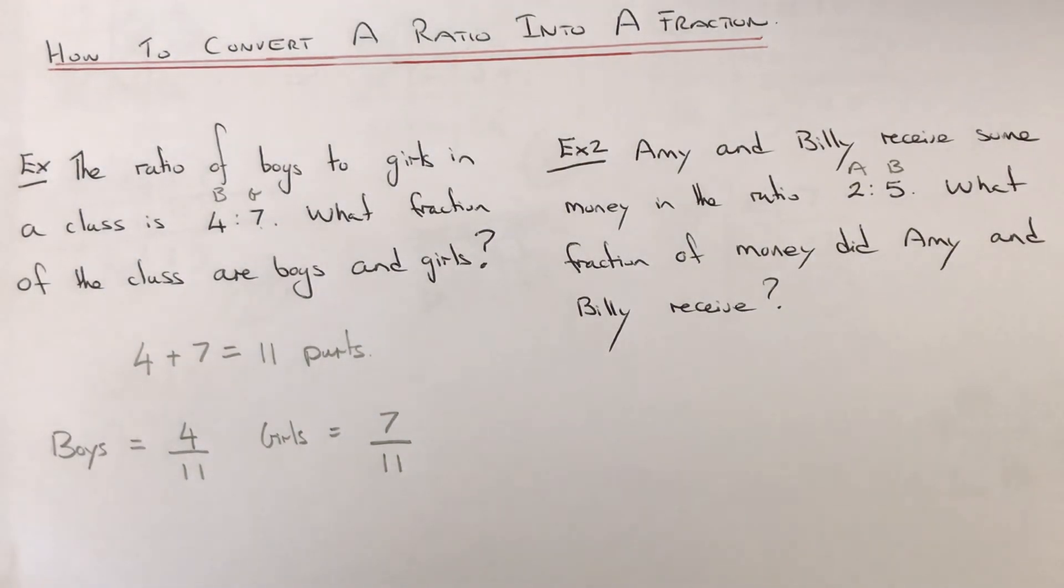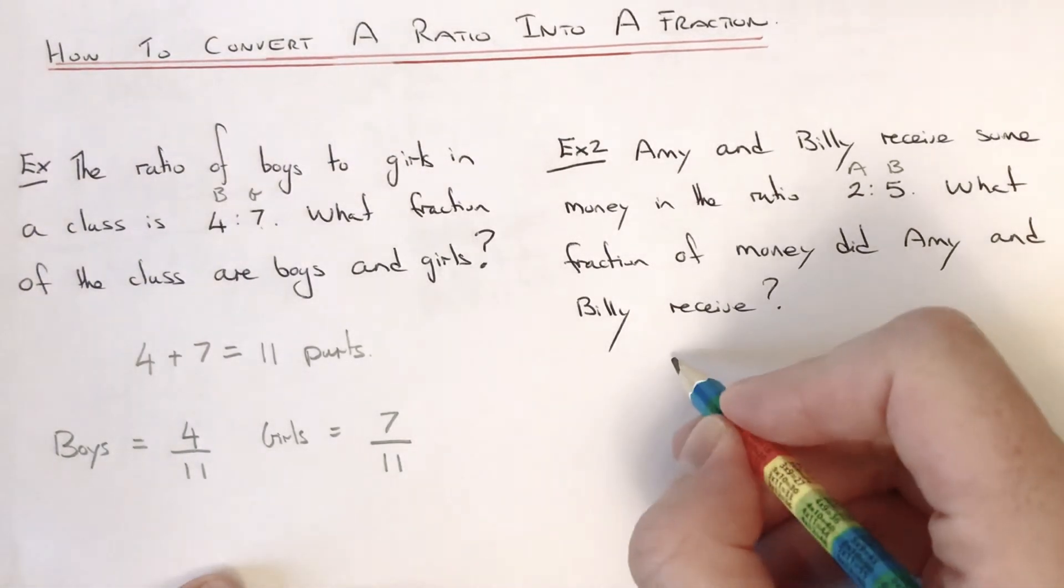Let's move on to example 2. Amy and Billy receive some money in the ratio 2 to 5. What fraction of money did Amy and Billy receive? Again, we just add up the parts in the ratio to give the denominator of both fractions.